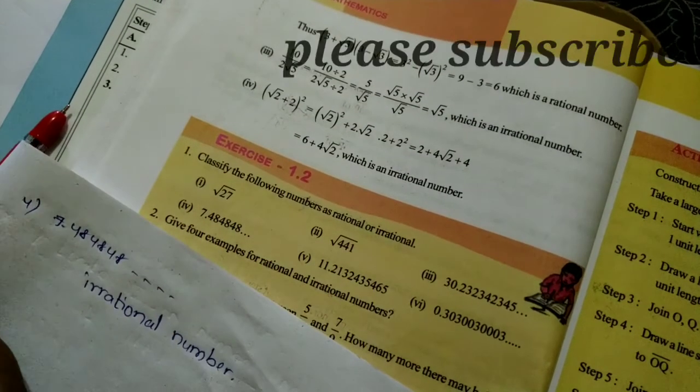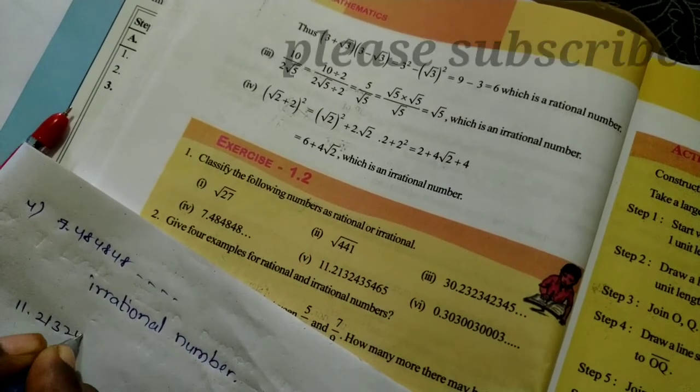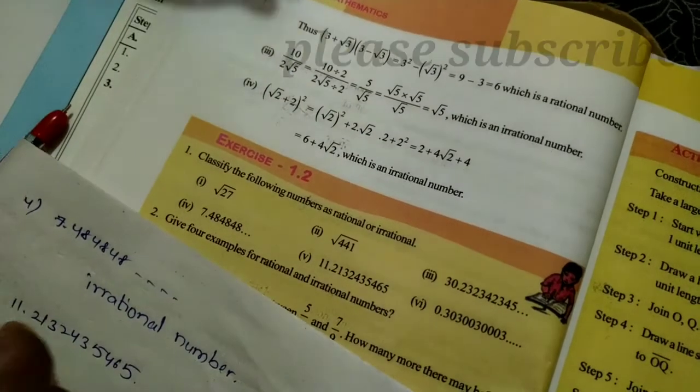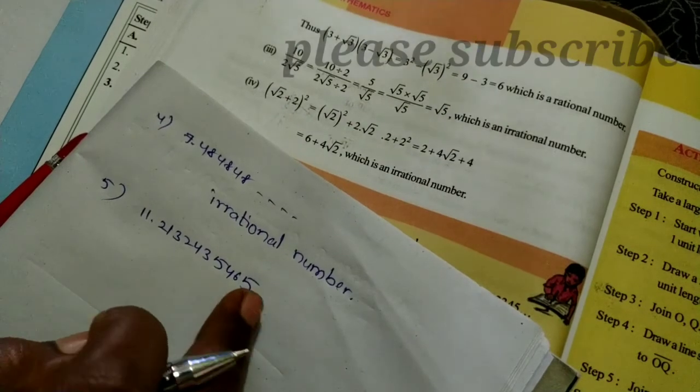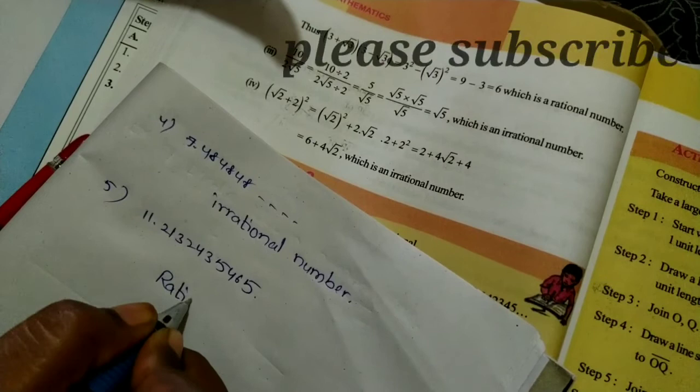Next, here is the fifth one: 11.2132435465. This number is not continuous, so this is a rational number.